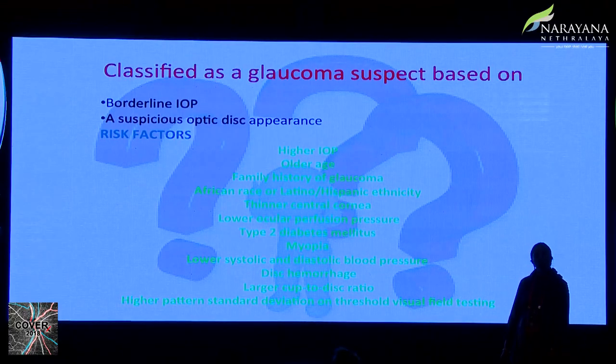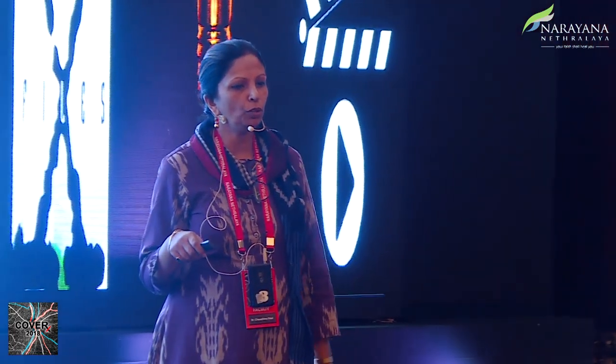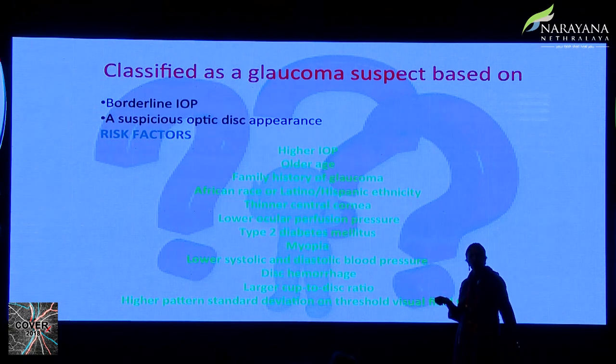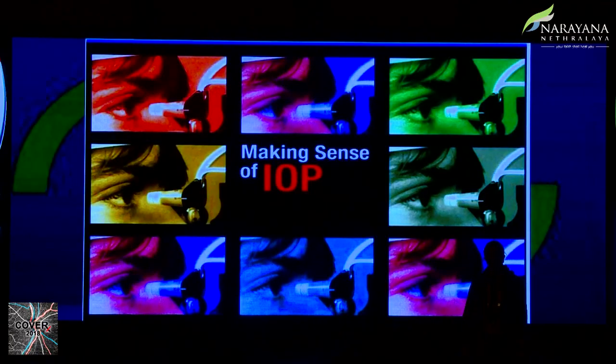A glaucoma suspect classification in this scenario is based on borderline IOP and a suspicious optic disc appearance. It's very important to take a good history and know the risk factors: higher IOP, older age, family history, African race, thinner corneas, lower ocular perfusion pressure, type 2 diabetes, myopia, lower systolic and diastolic blood pressures, disc hemorrhage, large cup-disc ratio, and higher pattern standard deviation on threshold visual field testing.